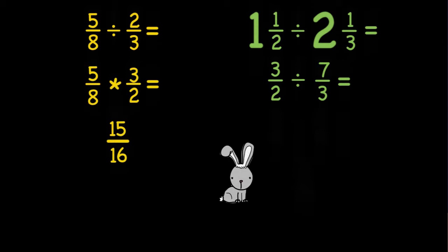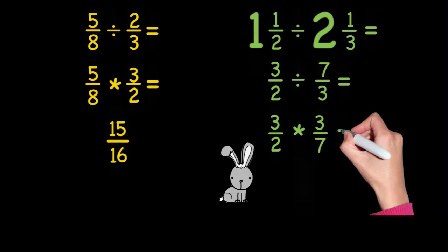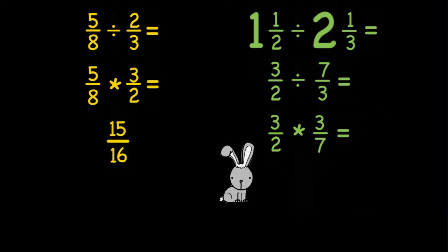Now I need to switch my division into multiplying by the reciprocal. So that would be 3 halves times 3 sevenths. And when I multiply across, I get 9 fourteenths. Now notice that when I divide by a number that's larger than the one I was dividing into, I'm going to get something smaller. I'm going to get a fraction less than 1.